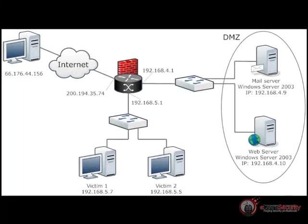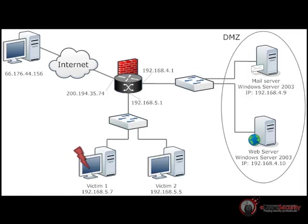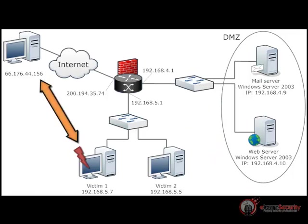In this video, we will use this scenario. We already have a meterpreter session on victim 1, so what we will do is scan the internal network — in this case the 192.168.5.0 subnet — and search for other possible targets. Through host discovery techniques, we will find host 192.168.5.5, which we will call victim 2. Since we can't access it directly from the internet, we will use the already open session on victim 1 as a bridge. This technique is called pivoting.